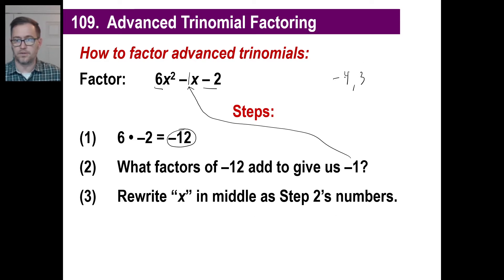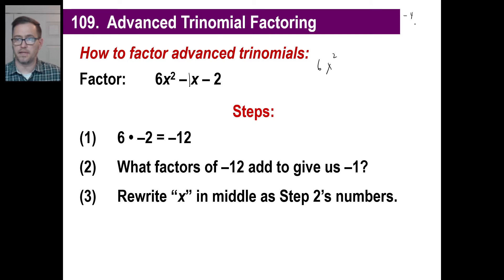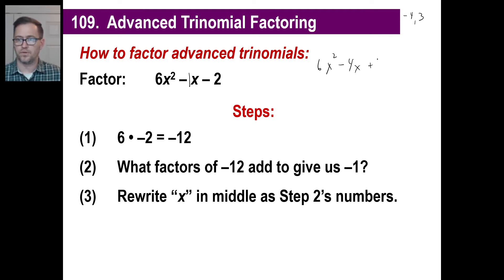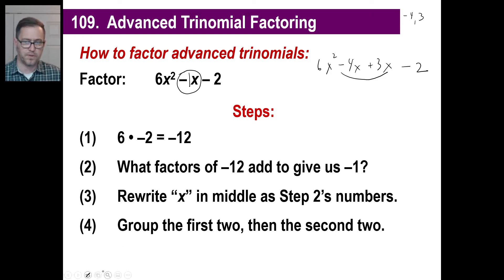Step three: rewrite the middle term using those two numbers. Instead of 6x squared minus 1x minus 2, we write it as 6x squared minus 4x plus 3x minus 2. Do you agree that negative 4x plus 3x equals negative 1x? That's all we're doing — rewriting the middle term.